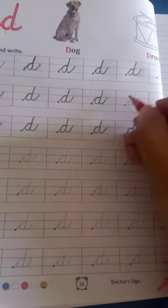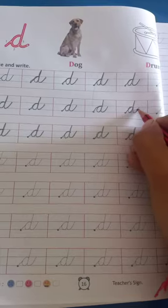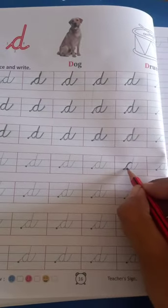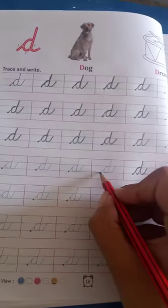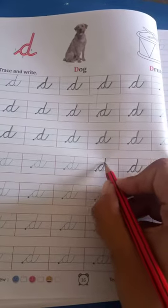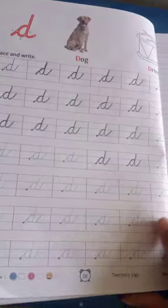D as dog. Speak and write. बोल बोल के लिखना आपको. D as dog. इस तरीके से आप इसको complete करेंगे. कर लेंगे न बेटा?